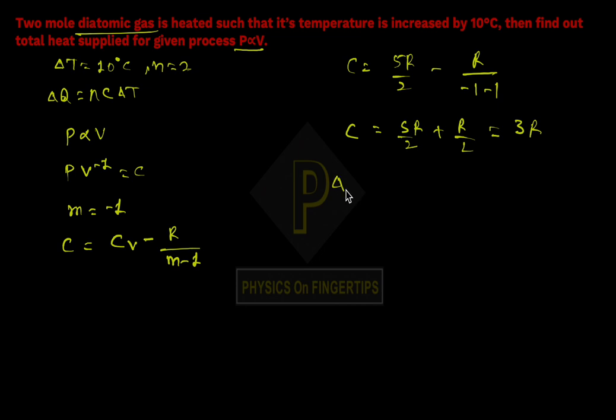Putting C = 3R, delta Q = n*C*delta T = 2*3R*10. The value that comes out is 60R, which can be written in calories as 120 calories.